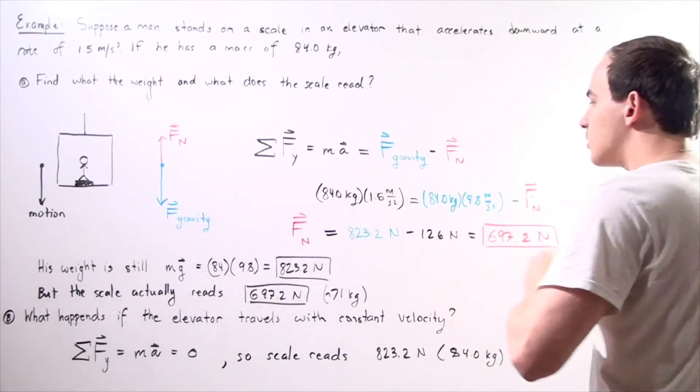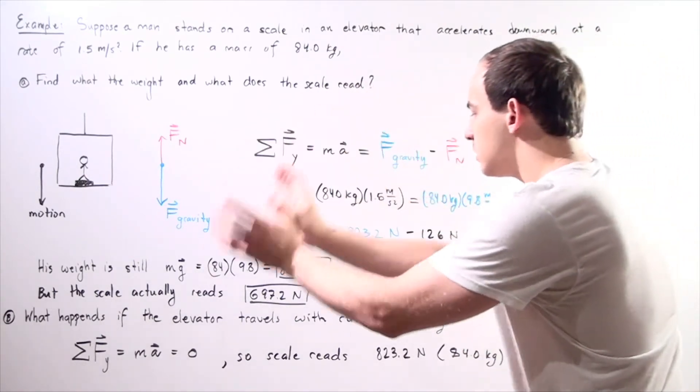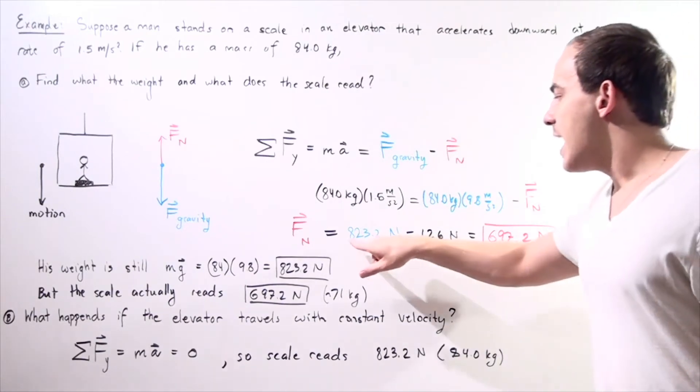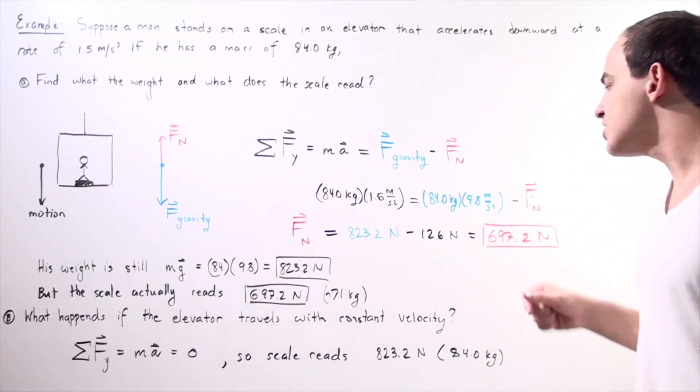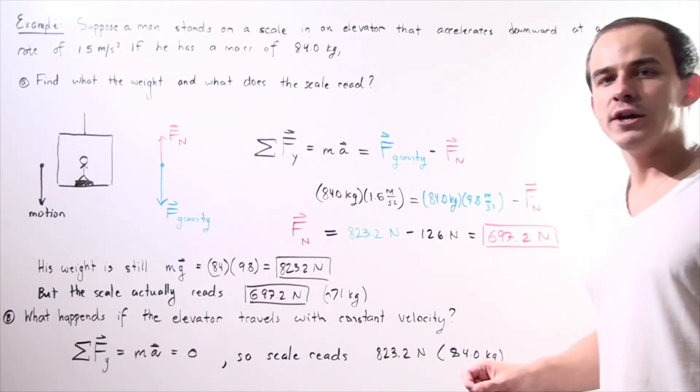We rearrange the equation. We want to solve for our normal force. We bring the normal force to the left side and everything else to the right side. We get 823.2 newtons minus 126 newtons gives us a force of 697.2 newtons.